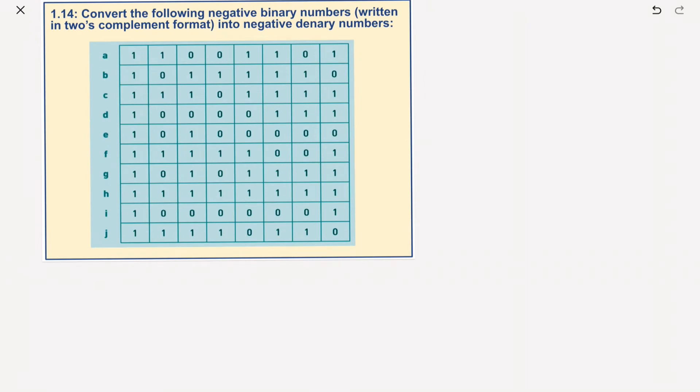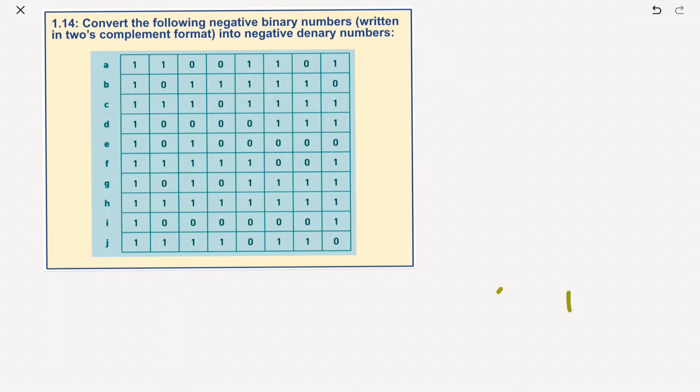As you will remember, we go 1, 2, 4, 8, 16, 32, 64, 128, but this is a minus. Now what it's saying is we've got 1, 1, 0, 0, 1, 1, 0, 1 in there.